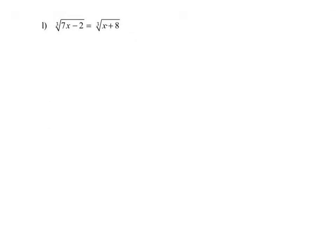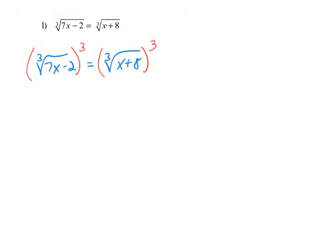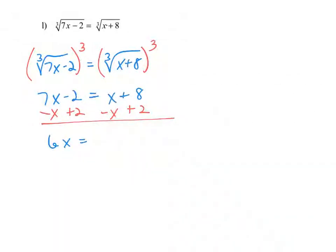In example L, we have the cube root of 7x minus 2 on the left equals the cube root of x plus 8 on the right. Since both radicals are isolated, the inverse of the cube root is to raise both sides to the third power. The left simplifies to 7x minus 2, and the right simplifies to x plus 8. Subtracting x and adding 2 to both sides gives 6x equals 10, and dividing by 6 gives x equals 10 over 6, which reduces to 5 thirds.